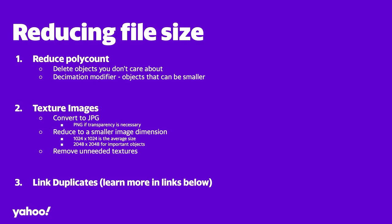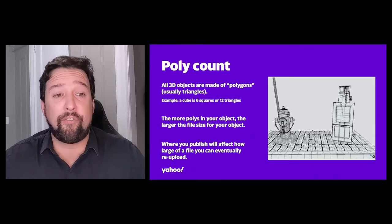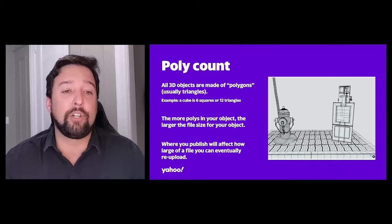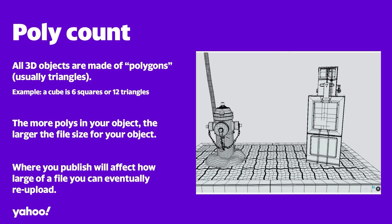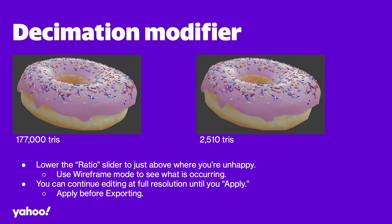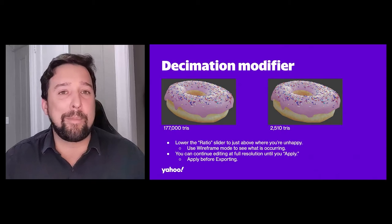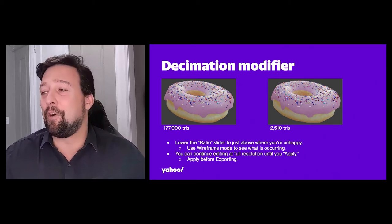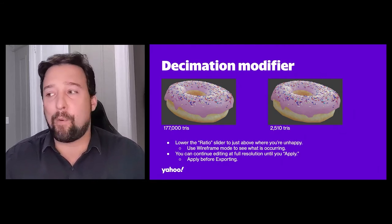Let's go into reducing poly count. Poly count is about how all 3D objects are made of a variety of polygons — usually triangles, sometimes quads — and the more polys in a 3D object or composition, the larger the file size. One of the main beginner-friendly ways to remove poly count is the decimation modifier. This modification applied in Blender lets us strip away polygons, almost like removing pieces from a Jenga game. Remove some pieces and it still looks like a tower; remove too many and it all comes crashing down.